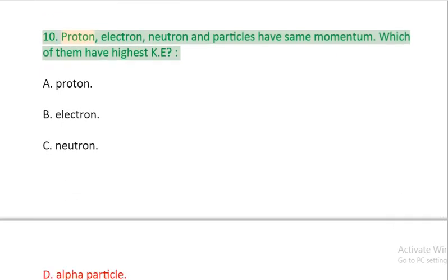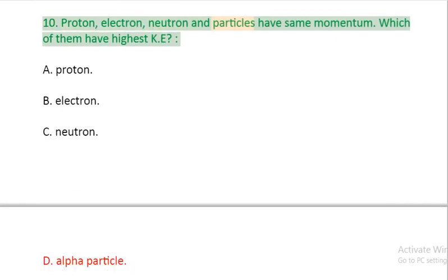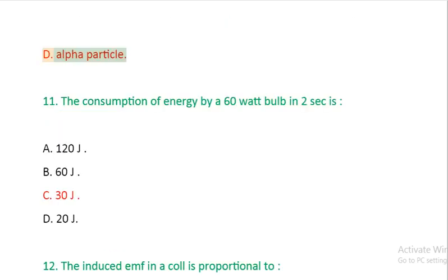Question 10: Proton, electron, neutron and alpha particles have same momentum. Which of them have highest kinetic energy? A: proton. B: electron. C: neutron. D: alpha particle.